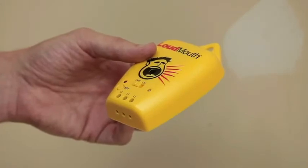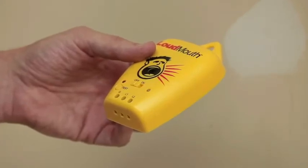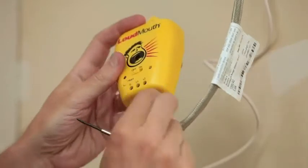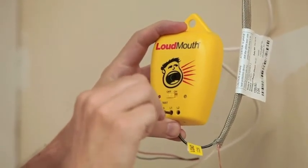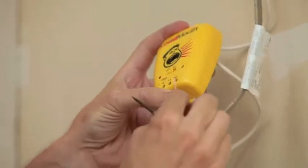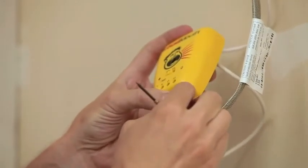If you purchased a loudmouth sensor with your system, now is the time to connect it. If the heating wire is cut or damaged during installation, the loudmouth will sound an audible alarm. Instructions for this alarm are available in the loudmouth sensor video.